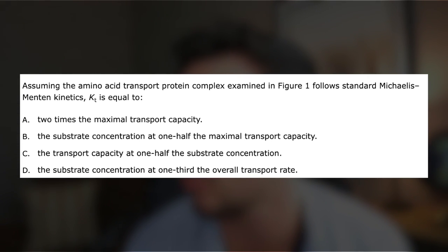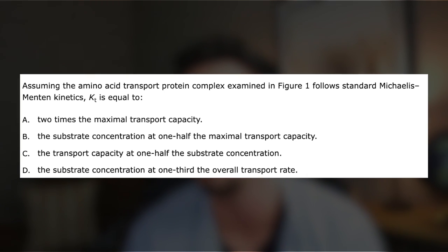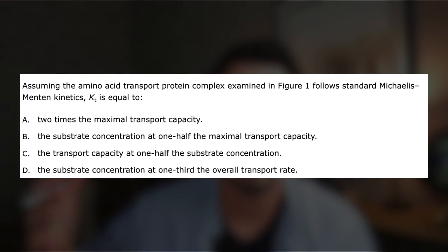The question says: assuming the amino acid transport protein complex examined in figure one follows standard Michaelis-Menten kinetics, Kt is equal to what? The use of 'Kt' throws off a lot of students, but the important part is recognizing this is about Michaelis-Menten kinetics. If you simplify the question as Maggie taught us to do, you're really just being asked: which answer choice describes Km?